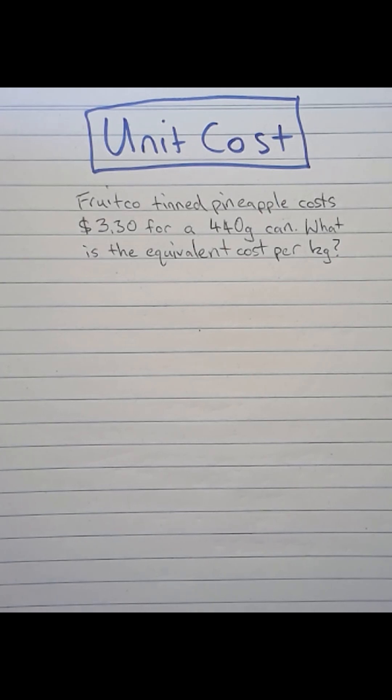So what I'm going to do here is first of all note that this is a proportional relationship between price and weight. We're going to use that to help us to convert between a price for a 440 gram can and a cost per kilogram or 1000 grams.